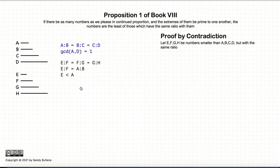We're going to prove this by contradiction, which means we're going to start off assuming that this proposition is false. So we're going to start by assuming that we have four other numbers, E, F, G, and H, where E to F is equal to F to G is equal to G to H, and the ratio of E to F is equal to A to B, and that E is less than A. So we are assuming that this proposition is not true, and here are our numbers that are less than A, B, C, D.